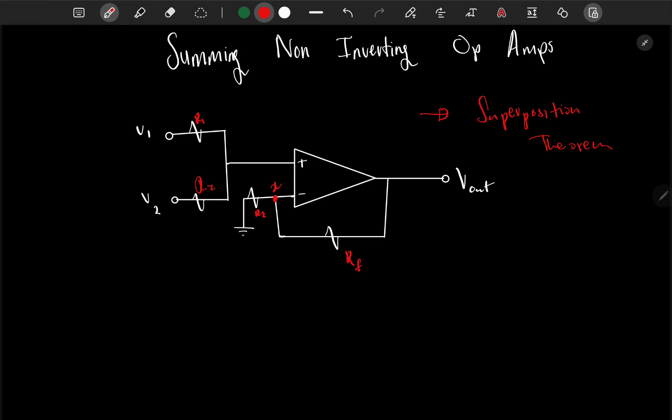So with superposition, first we want to find, first we know that whatever V that we supply for this non-inverting, whatever V that we supply here, let me call it V_in, the V we supply should be V_out.